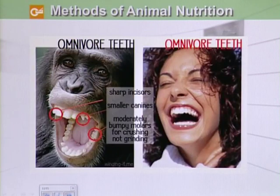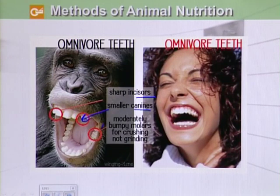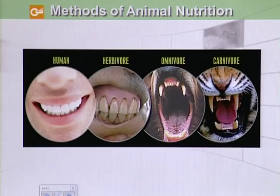Omnivore teeth have sharp incisors, smaller canines, and moderately bumpy molars which are used for crushing rather than grinding. This is another figure showing a comparison of omnivore, herbivore, and carnivore teeth.